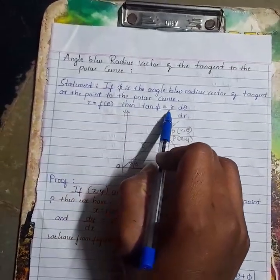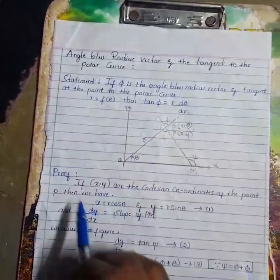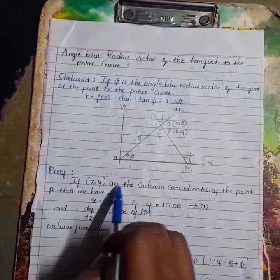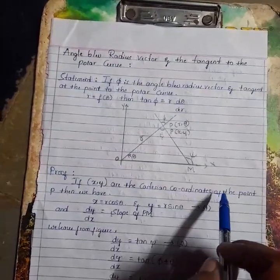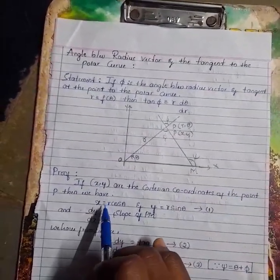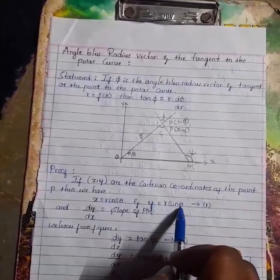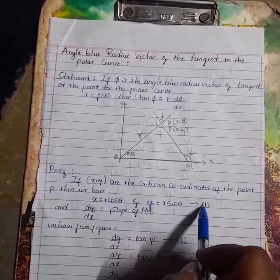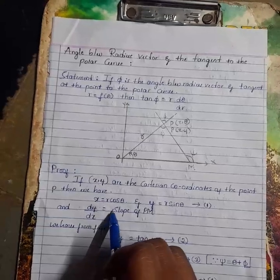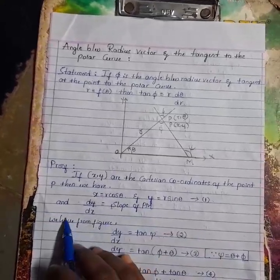Proof: If (x, y) are the Cartesian coordinates of point P, then we have x = r·cosθ and y = r·sinθ. This is equation number one. dy/dx is equal to the slope of PM.